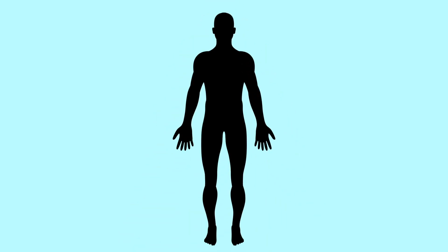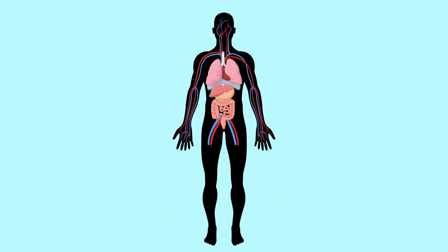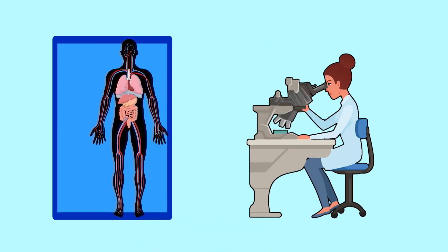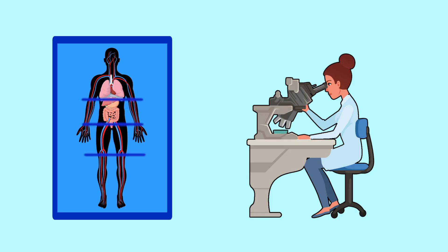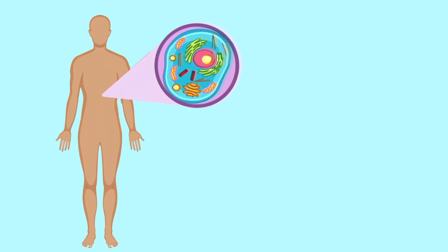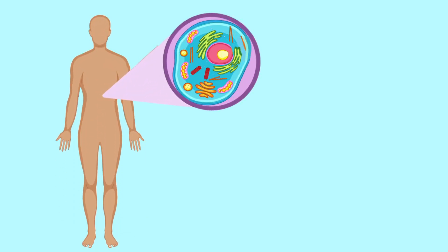Human anatomy ki simplicity or complexity par aaj bhi saikro researches kiya jate hain. And this study is still endless. So, let's begin this subject with the most basic and primary unit of anatomy, the human cell.